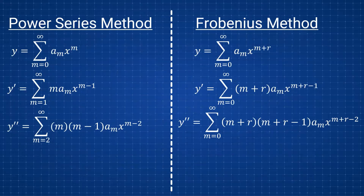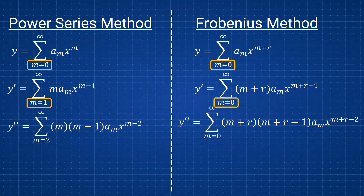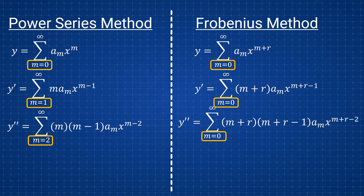Let me show you the difference between the power series and Frobenius side by side. You can see the power series definitions on the left and Frobenius on the right. For the definition of y, both start with m equals zero, but while the power series shifts to m equals one for y prime, the Frobenius method keeps the index at zero. For y double prime, power series starts at m equals two while Frobenius also stays at zero. So power series indices go 0, 1, 2 as you increase the derivative, but Frobenius keeps all indices starting at m equals zero — that is a key difference.